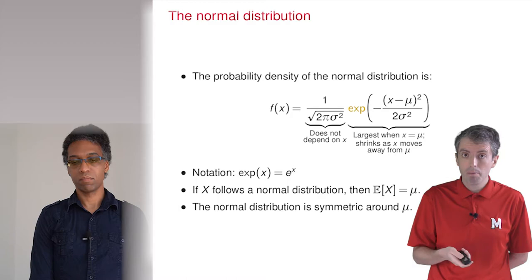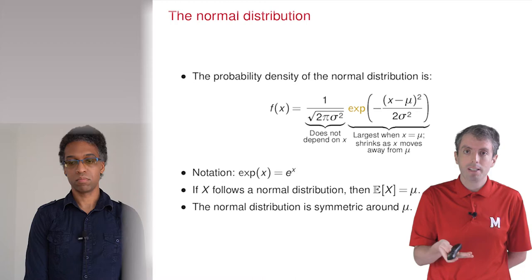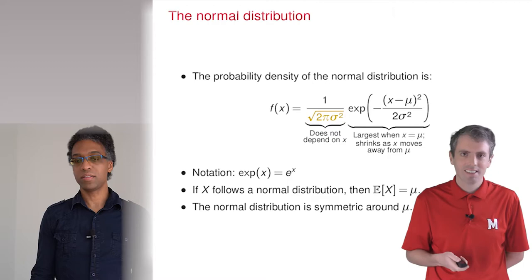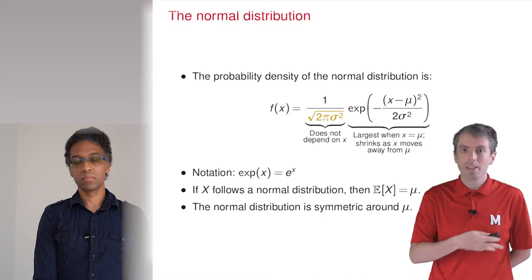Exactly. And that's why we have the exp function. That turns it into a positive number. But the larger the input into the exp is, the larger the output is. So the closer you are to the mean, the higher the probability. And the bit with the square root makes it so that it's less than 1.